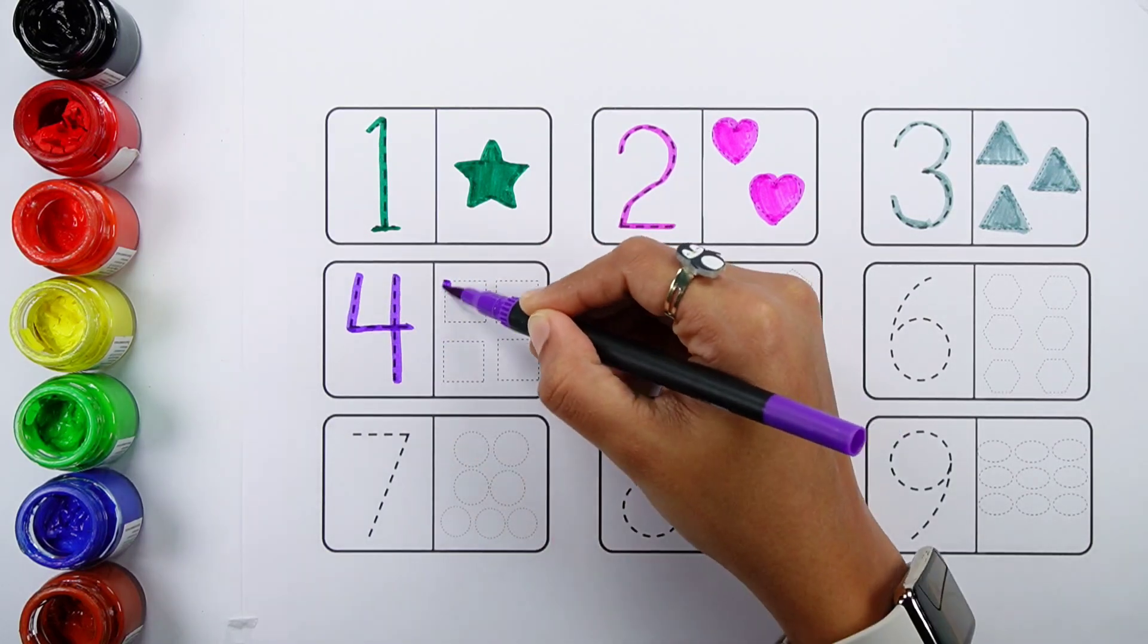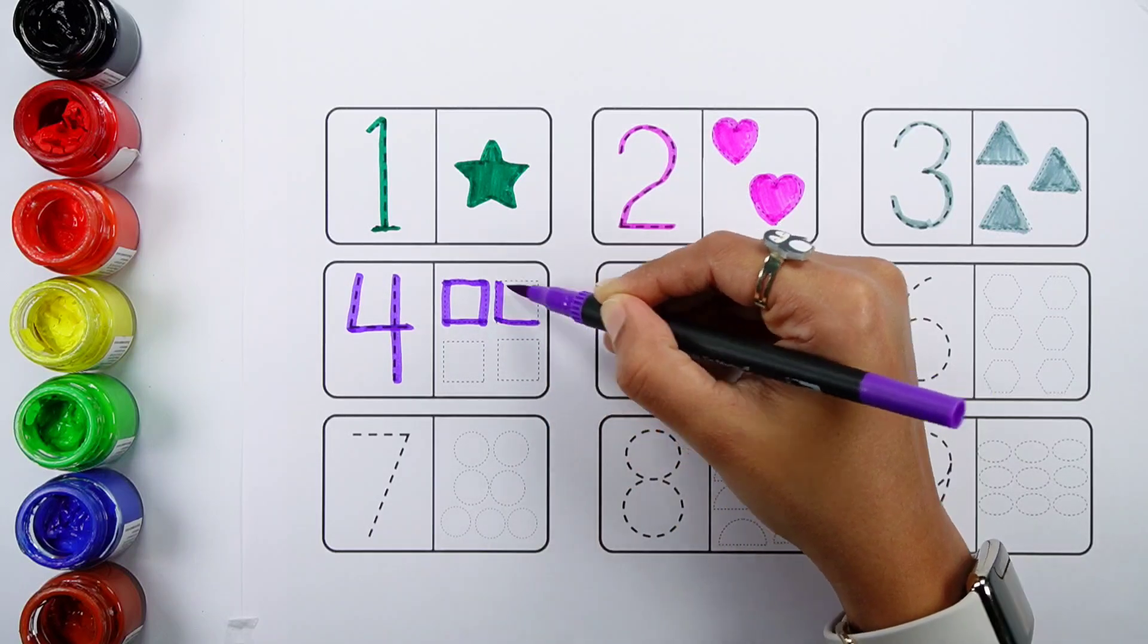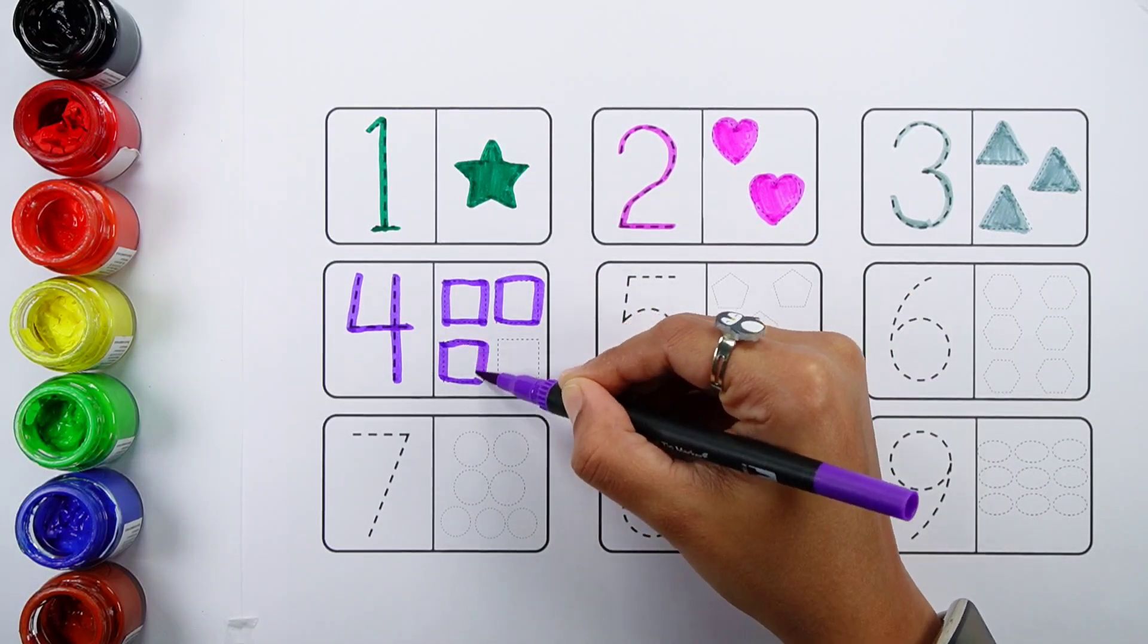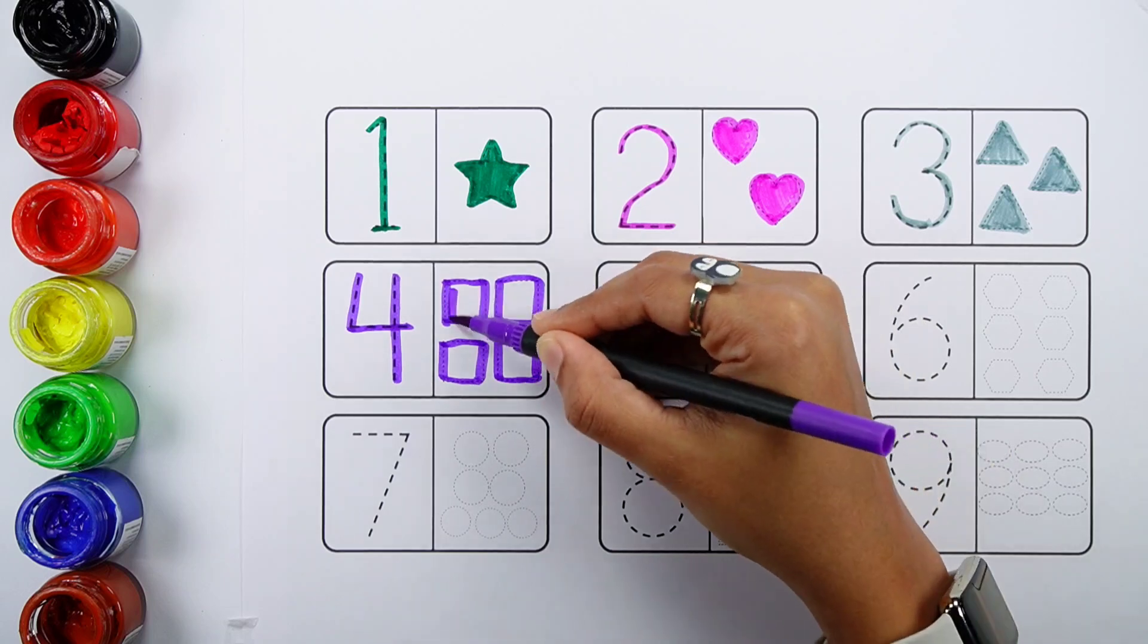Number four. One, two, three, four. Four squares.